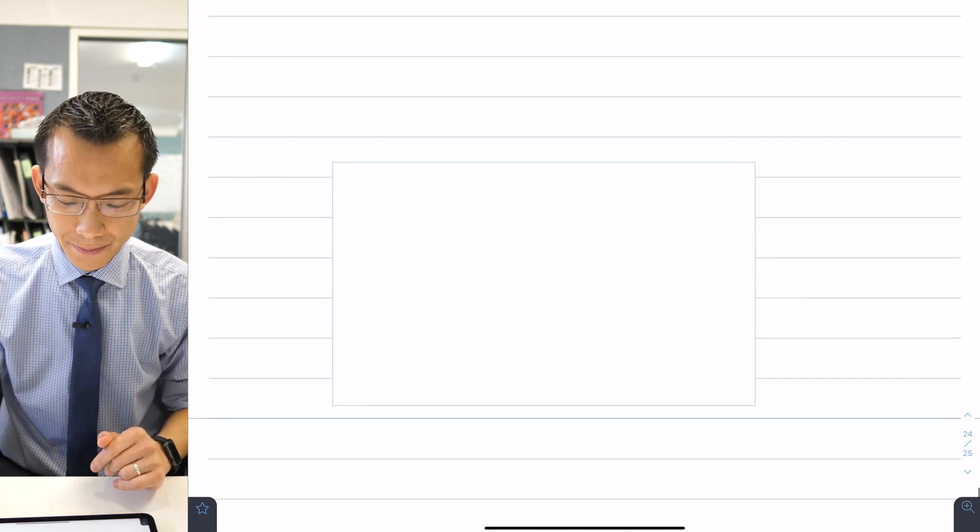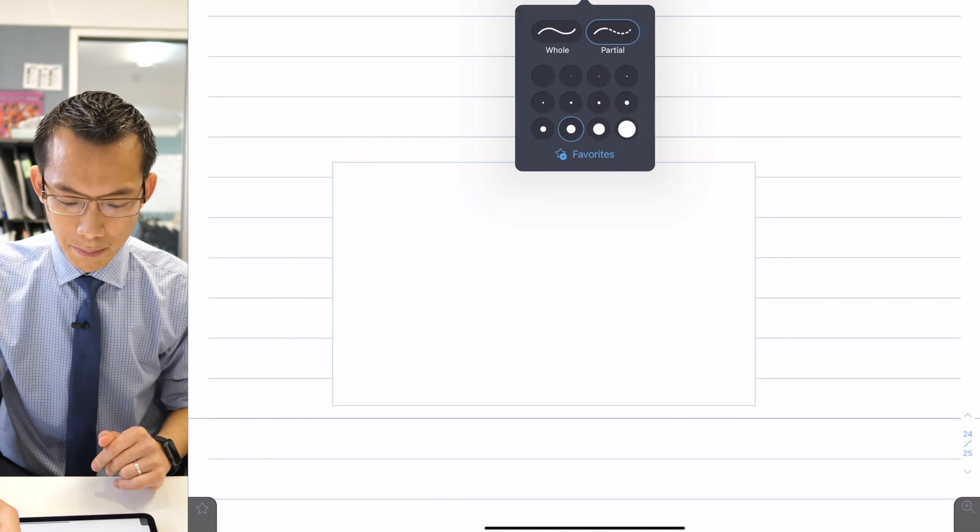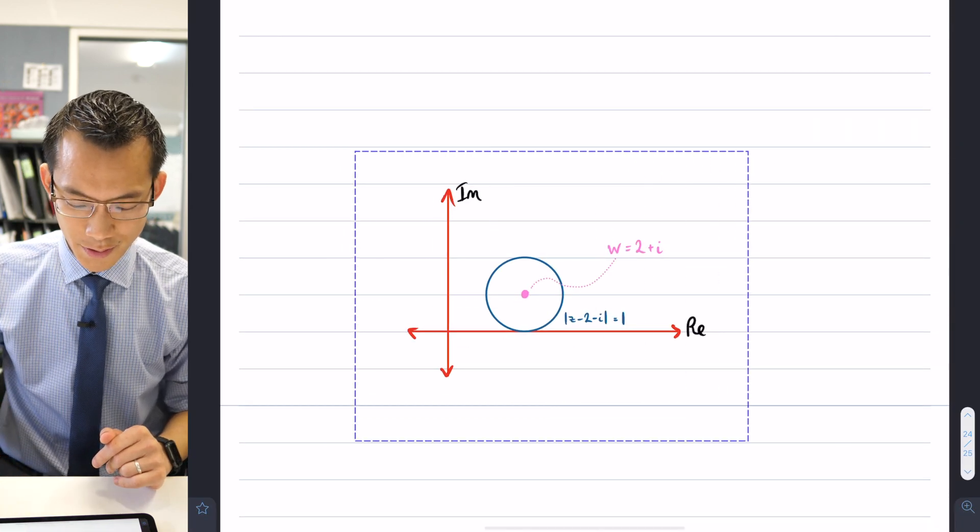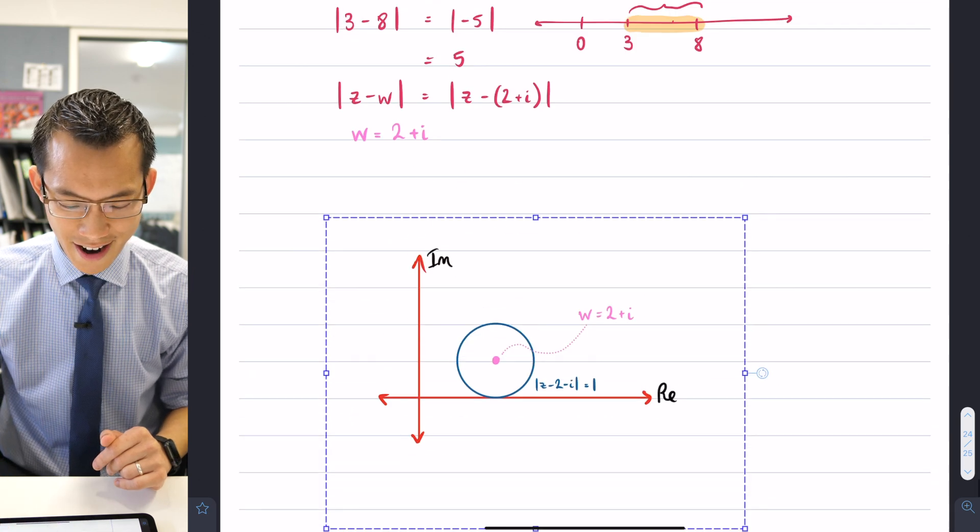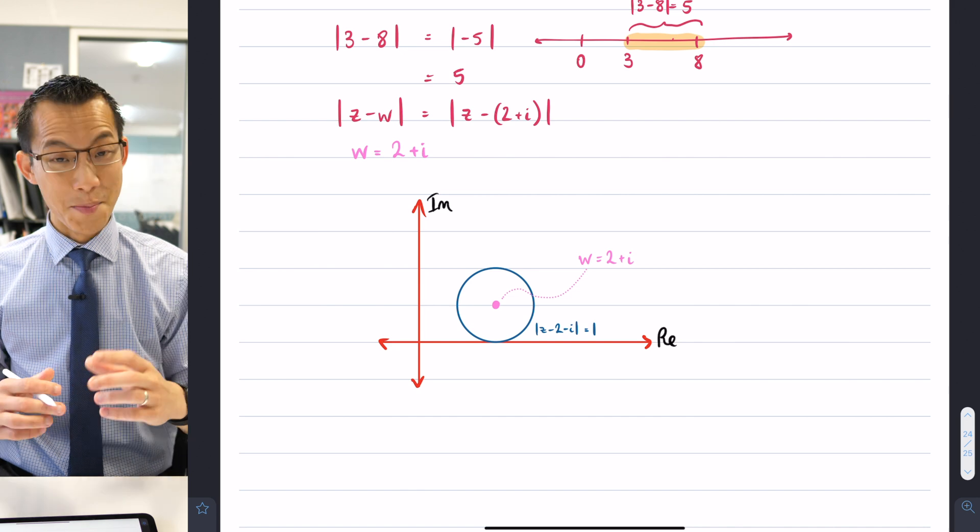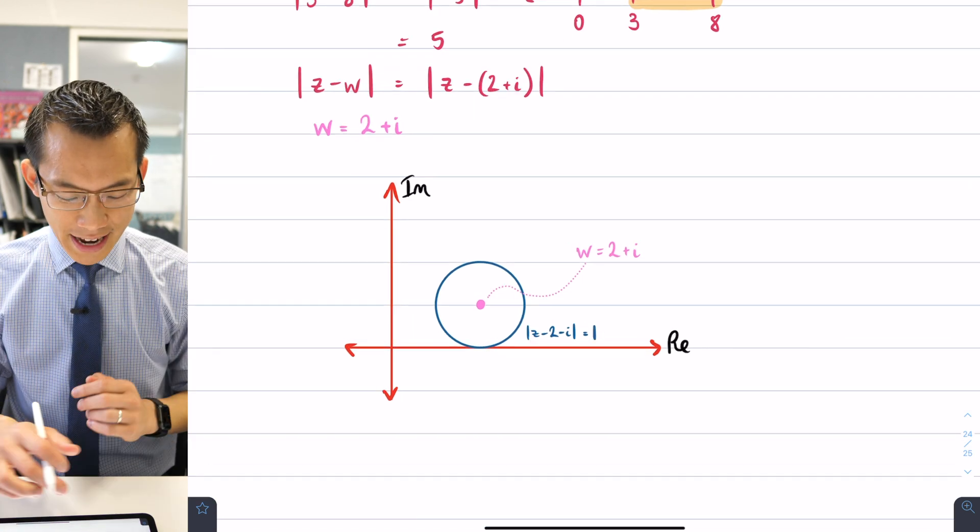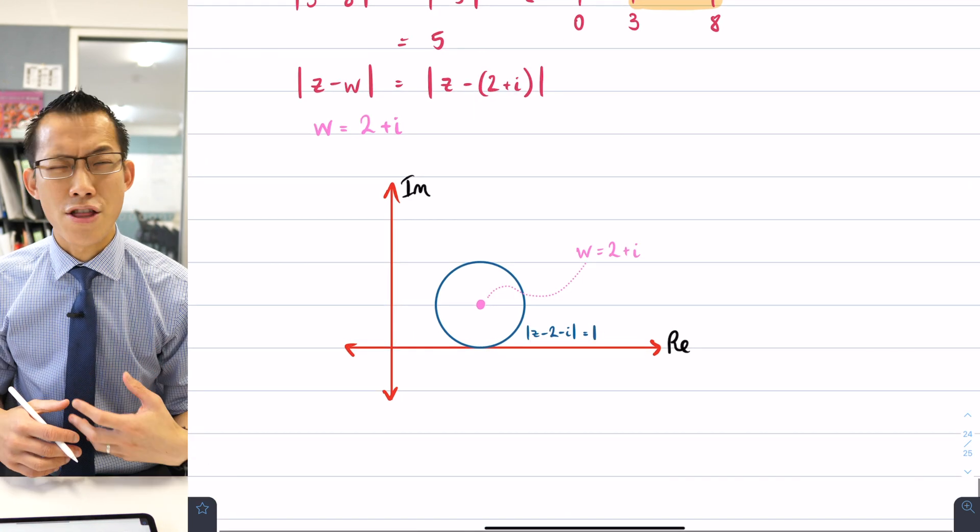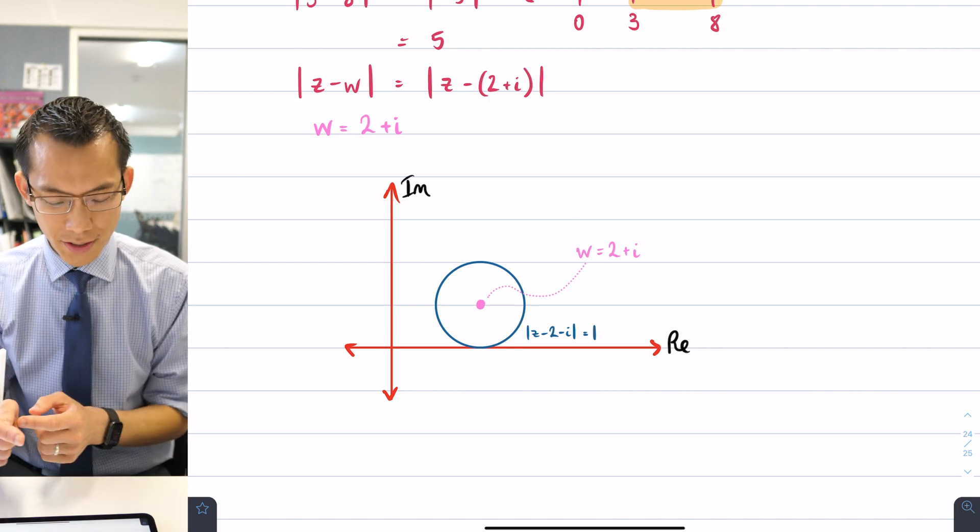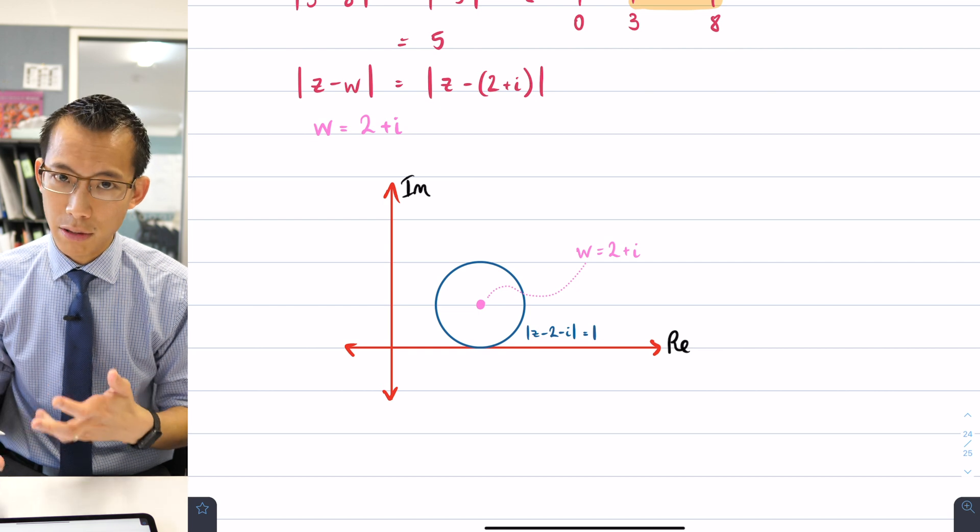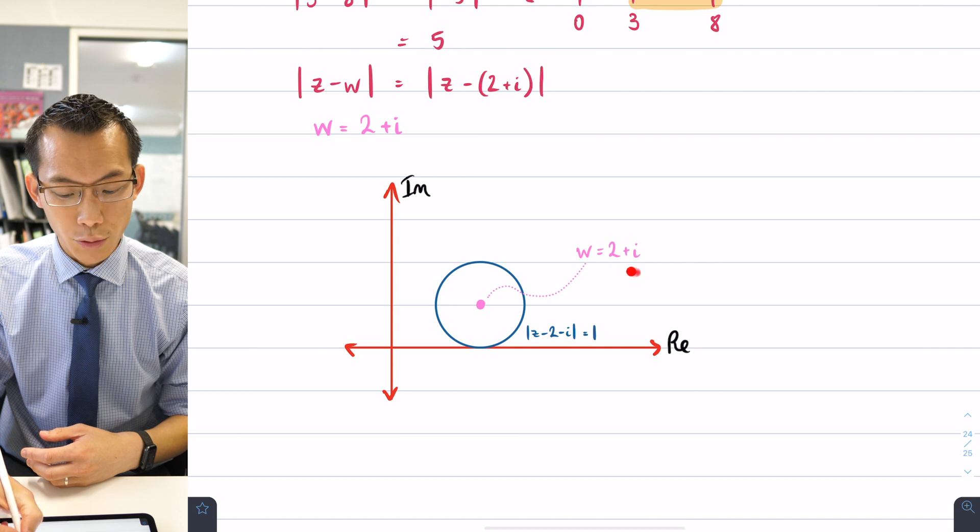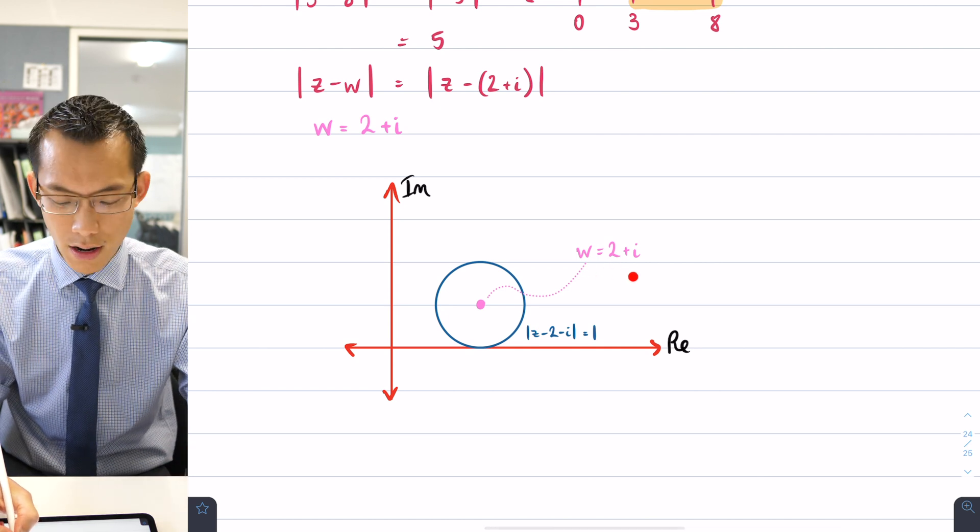So that's why you're going to get this diagram here. Let's move this up so it's a bit closer to where we're doing our working. Here we go. So here's what I prepared earlier just so that I could do it more neatly and quickly for you. Here is the circle, we might say the locus to use a very fancy word. The collection of points, the set of points on the complex plane that are all exactly one unit from this central point w which I've designated as 2 plus i.